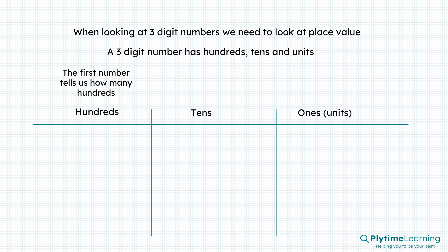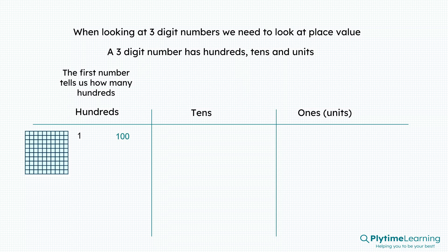The first number tells us how many hundreds. This is what a hundred square looks like. We might have 1 which is 100, 2 which is 200, 3 which is 300, and so on up to 9 which is 900.